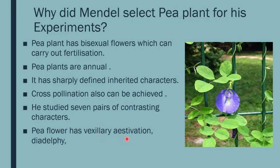Pea flower shows vexillary aestivation — a standard large petal, two wings on the sides, and in the center two petals joined to form a boat-shaped structure called the keel. The pea flower also has diadelphous anthers: there are ten stamens in all forming two bundles. Nine stamens have their filaments fused together while the anthers are free, and one stamen remains separate — that is diadelphous.